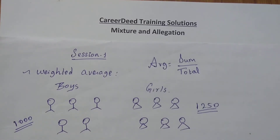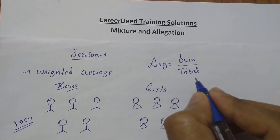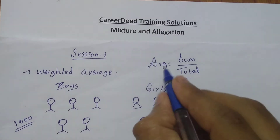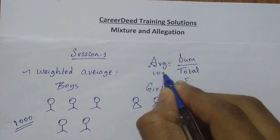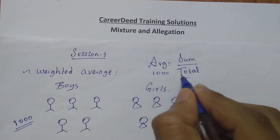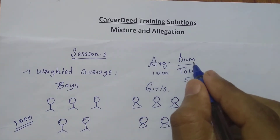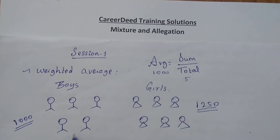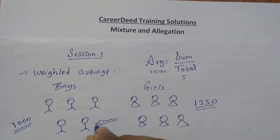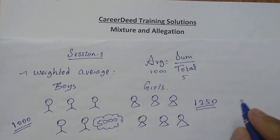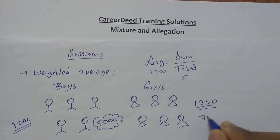The total number of boys is five and the average amount spent by boys is one thousand. Using the formula: sum equals average multiplied by total, that gives five thousand rupees spent by the boys. For the girls, there are six girls and the average is one thousand two hundred and fifty, so six multiplied by one thousand two hundred and fifty gives seven thousand five hundred rupees spent by the girls.